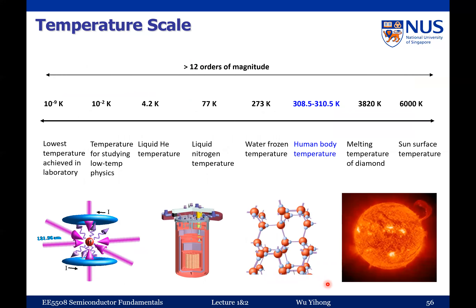When we study physics or engineering, it is always important to understand the scale of the physical quantities we are dealing with. Since we are dealing with temperature, it's good to look at the range of temperatures that can be achieved or exist in nature. The lowest is absolute zero temperature, which is difficult to achieve. About 20 to 30 years ago, people developed a technique called laser cooling.